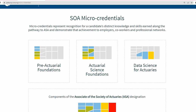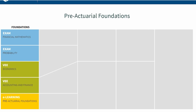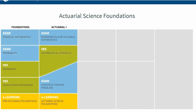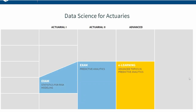The three micro-credentials introduced include: Pre-Actuarial Foundations, Actuarial Science Foundation, and Data Science for Actuaries. The Pre-Actuarial Foundations includes the overlap requirements with the CAS like Exams P and FM, VEE Economics, VEE Accounting and Finance, plus an e-learning course. The Actuarial Science Foundation adds two more exams: Fundamental Actuarial Mathematics and Statistics for Risk Modeling, plus a VEE in Mathematical Statistics. The Data Science for Actuaries credential covers Statistics for Risk Modeling and Predictive Analytics, plus an e-course on advanced topics in predictive analytics.